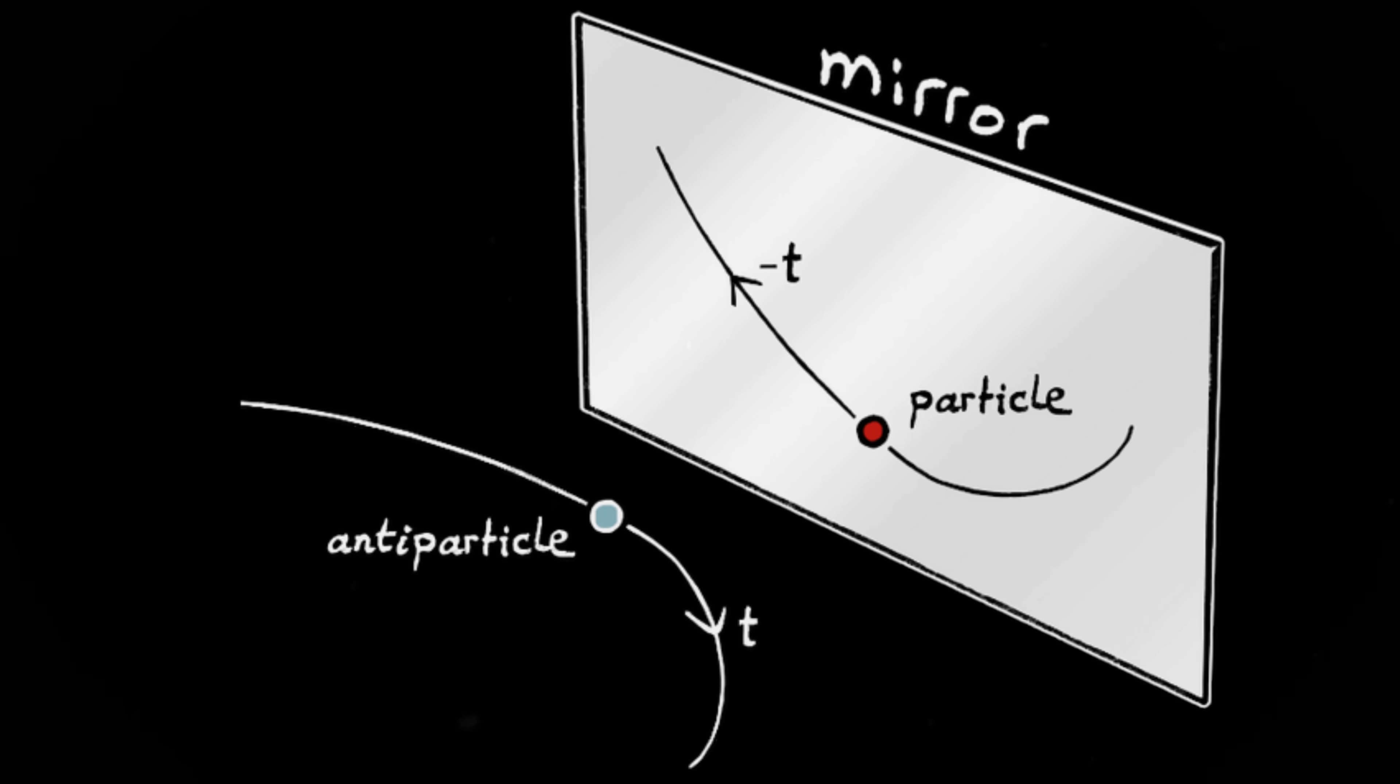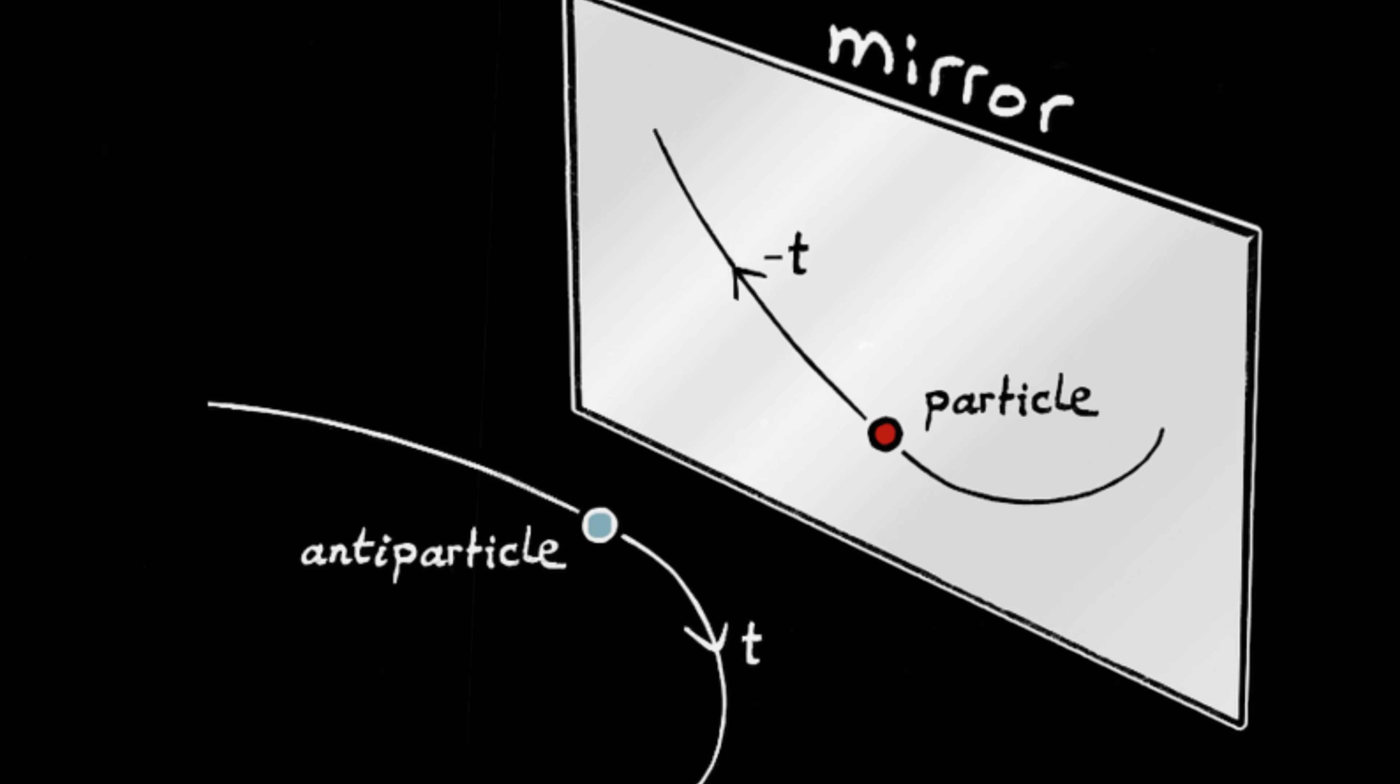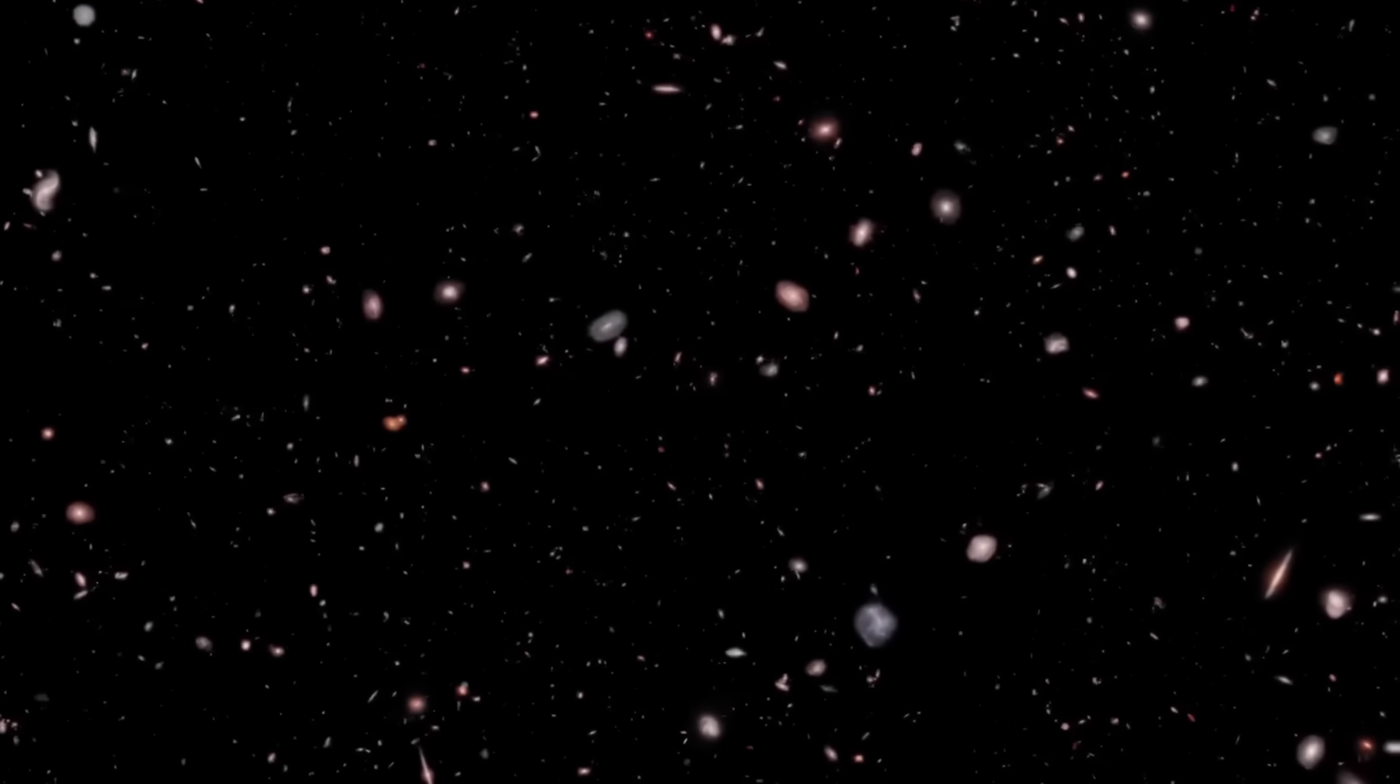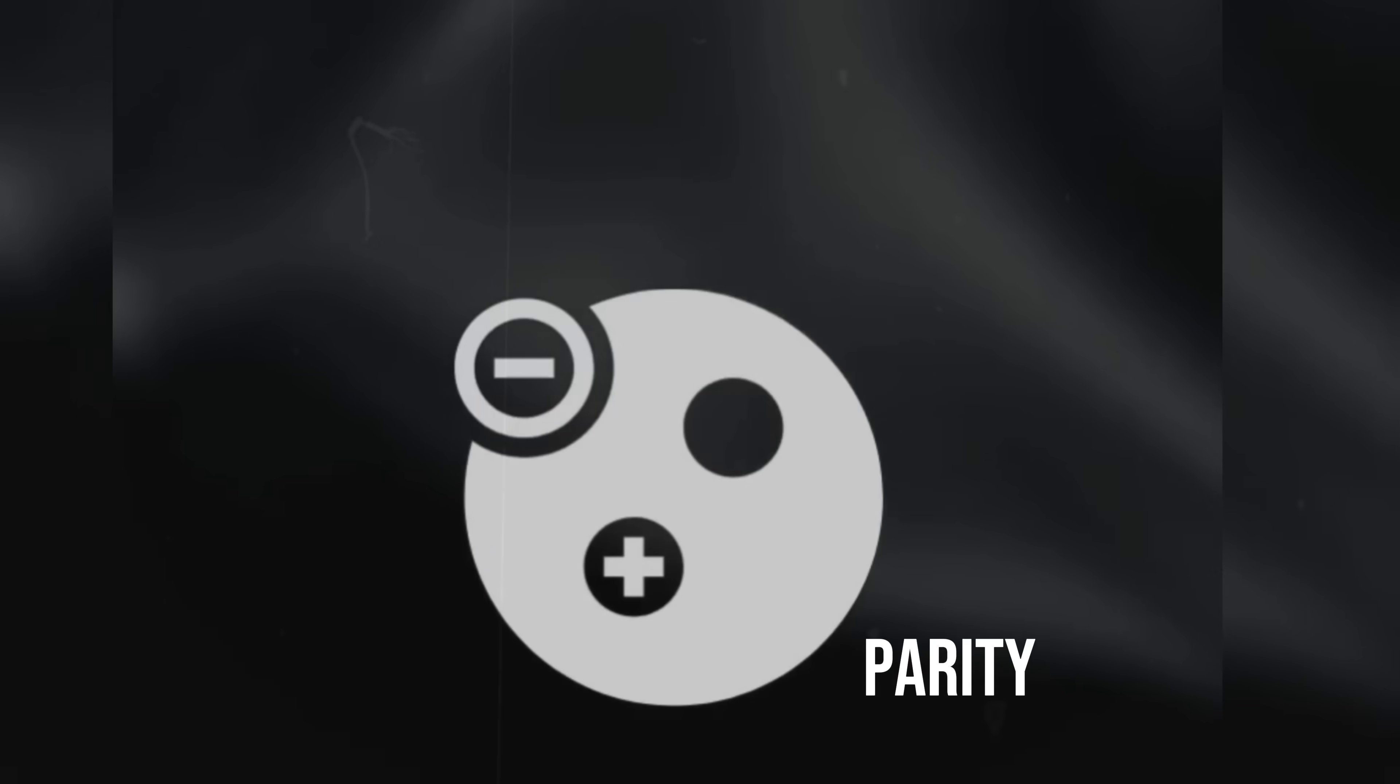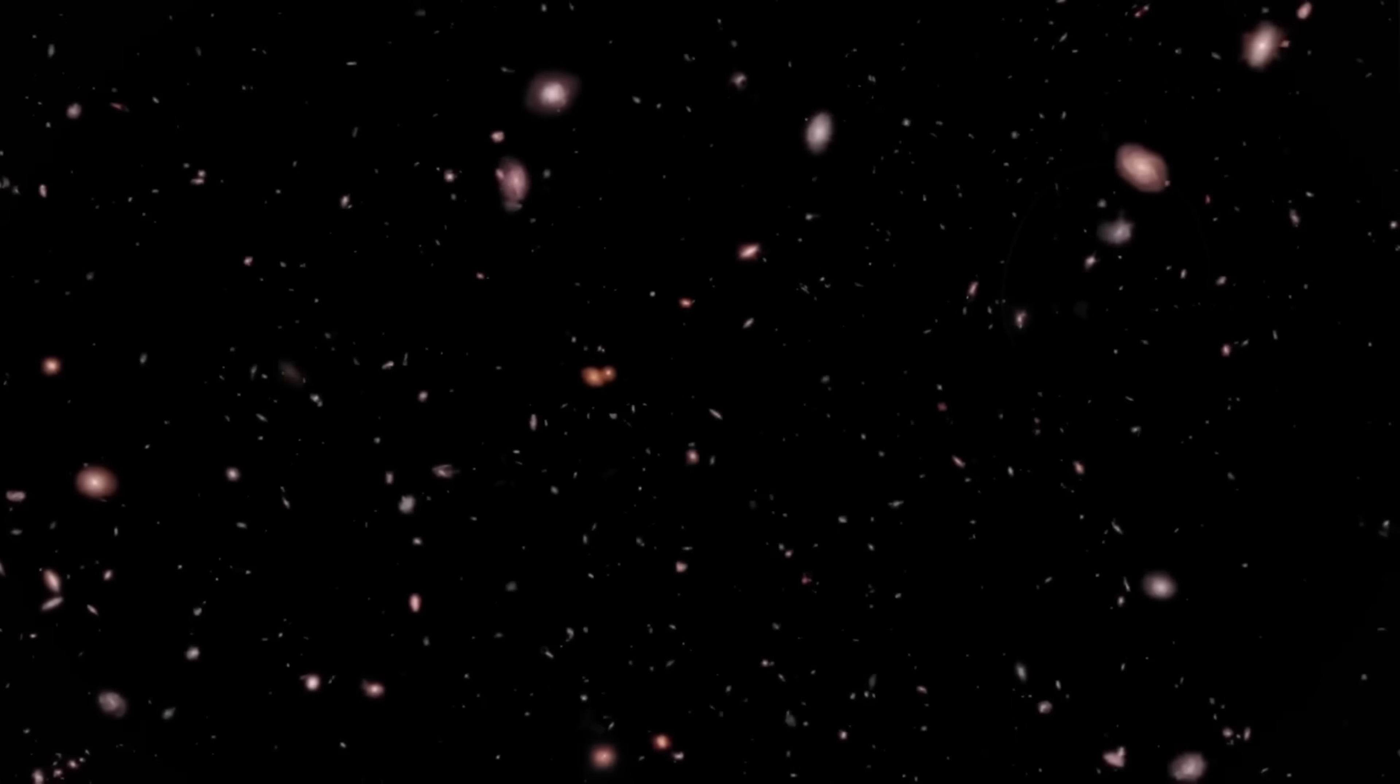This idea fits with CPT symmetry, a fundamental principle in physics stating that all processes have a mirror counterpart where space, time, and particles are reversed. Imagine the universe as a grand cosmic stage where particles follow three fundamental rules: Charge, replacing matter with antimatter; parity, flipping everything like a mirror image; and time, reversing the sequence of events. If all three are reversed simultaneously, the laws of physics remain unchanged, a perfect balance.